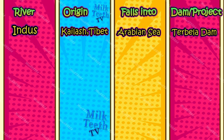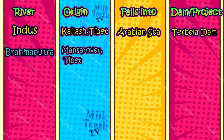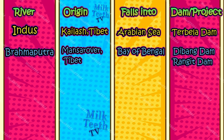Brahmaputra River: it originates from the Mansarovar range in Tibet and drains into the Bay of Bengal. The Debang Dam and the Rangit Dam are both constructed over the River Brahmaputra.